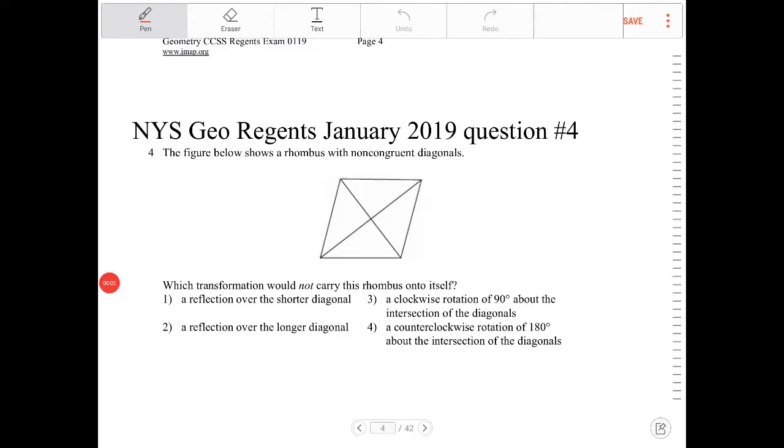The figure below shows a rhombus with non-congruent diagonals. Which transformation would not carry this rhombus onto itself? What this question is really asking for is your understanding of the different types of symmetry that a rhombus has.